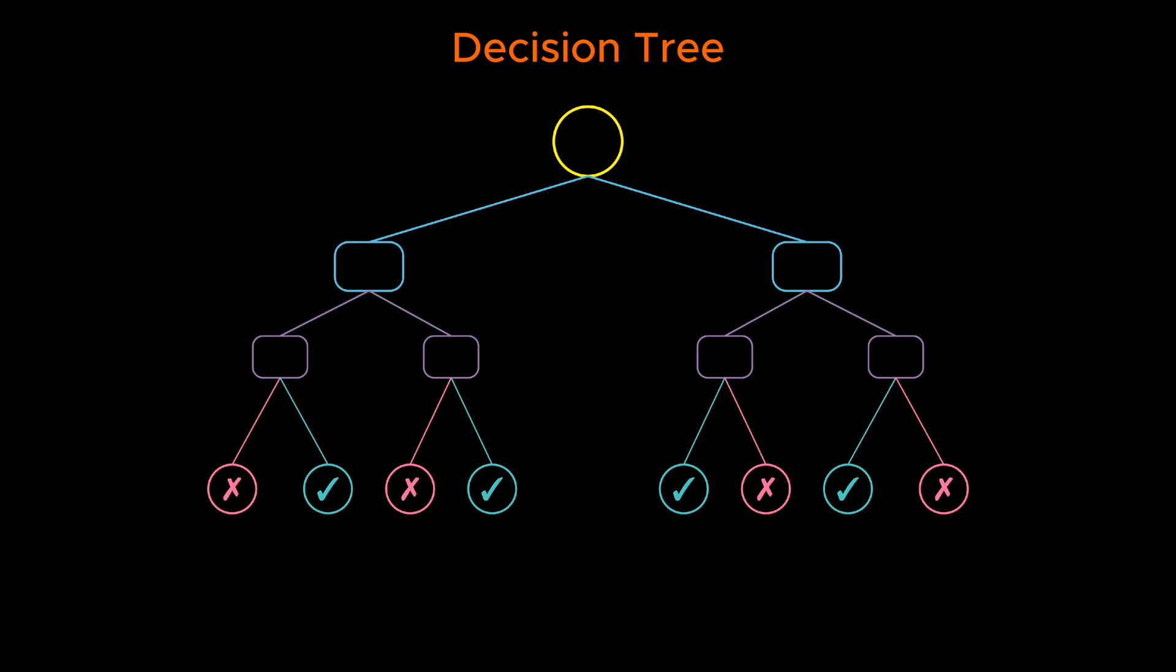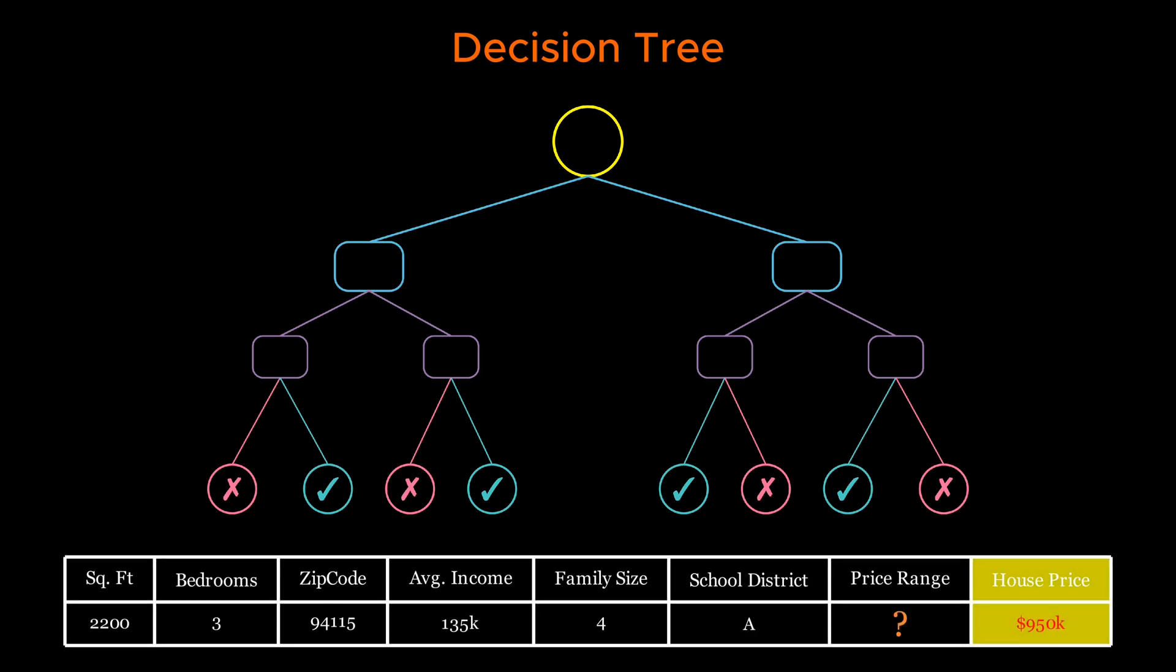Once the tree is built, predicting for a new sample is simple. You follow the rules down the tree. Does it go left or right at each split? Eventually, you arrive at a leaf node. The class of that leaf node is the model's prediction.